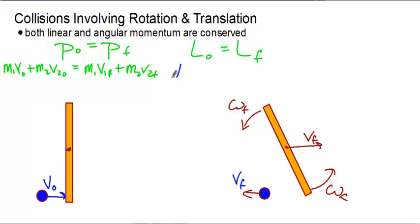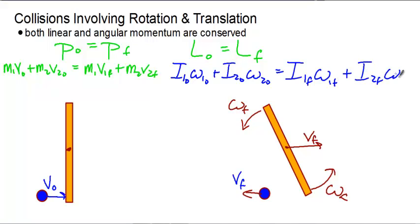Same idea over here for our angular momentum. We're going to have I1 naught omega 1 naught plus I2 naught omega 2 naught equals I1 F omega 1 F plus I2 F omega 2 F.